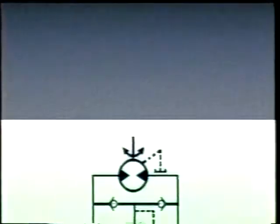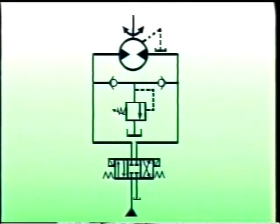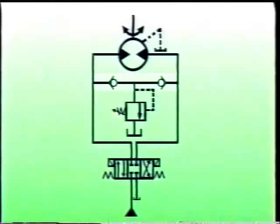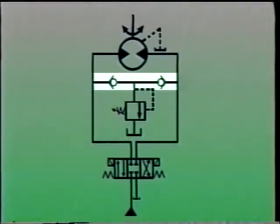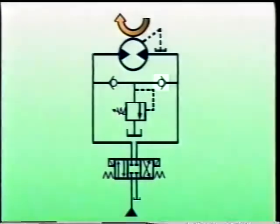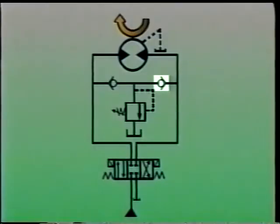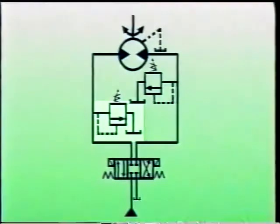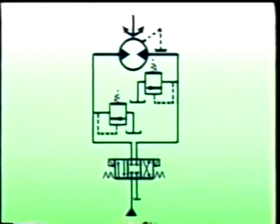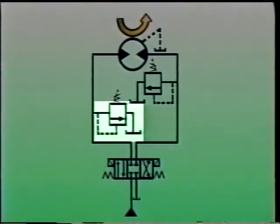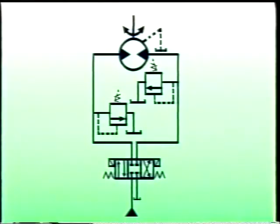Bi-directional motors — motors that can rotate in either direction — can be braked in a similar way. In this circuit, the same relief valve can be used even though the motor can be braked in either direction, because dual check valves isolate the braking side of the circuit no matter which direction the motor is turning. The check valve on the left prevents fluid from returning to the left side when the motor is braked while turning clockwise, and the check valve on the right prevents fluid from returning to the right side when the motor is braked while turning counterclockwise. When two different loads must be braked, two relief valves may be used to apply two different braking pressures — one limits braking pressure in one direction, and the other in the other direction.